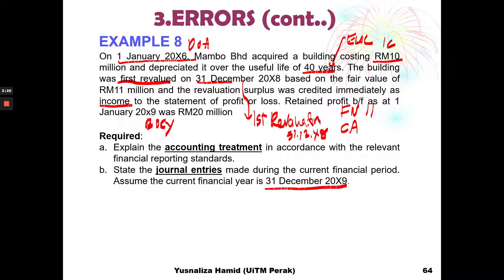The beginning of the current financial year is 1st January 20X9, so this is the opening balance of retained profit — the opening balance of the equity component. You are asked to explain the accounting treatment: first identify whether there is a prior period error or current period error, then look at the journal entries to correct the error.